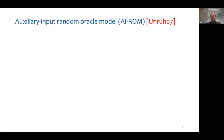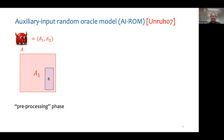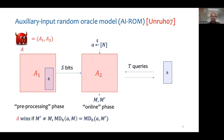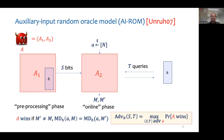The auxiliary input random oracle model introduced by Unruh captures the power of preprocessing adversaries against random oracles. The collision resistance game in this model is formalized as follows. An adversary is modeled as a two-phase one. Its preprocessing phase gets full access to the random oracle and outputs s bits, which is passed on to the online phase, which additionally gets as input a randomly sampled salt a. The online phase can make at most t queries to the random oracle, and the adversary wins if the online phase outputs two distinct messages which have the same hash with respect to the salt a. We refer to such an adversary as an st-adversary.